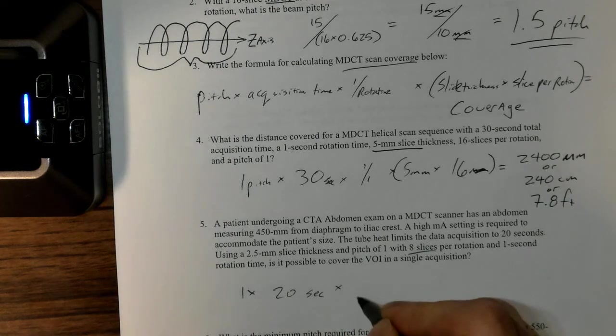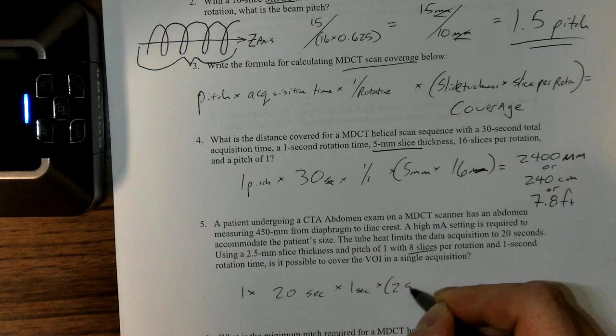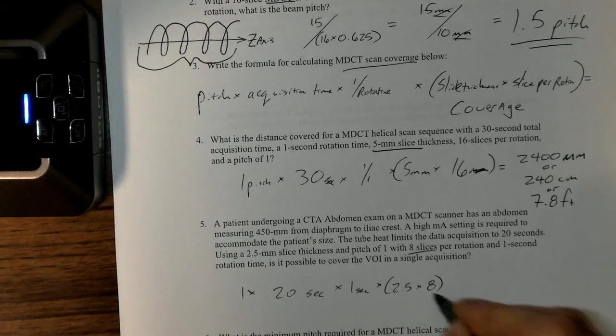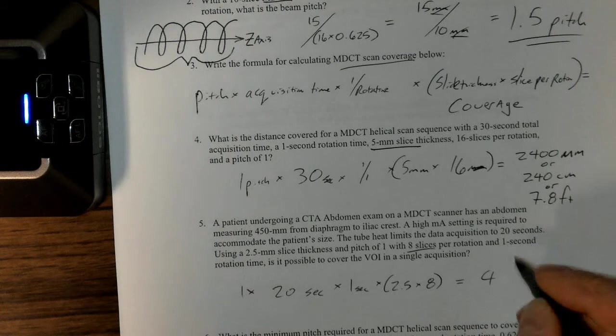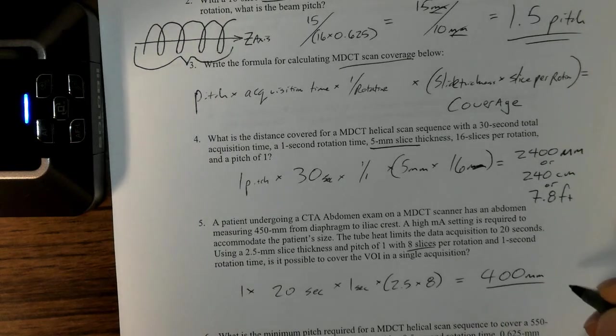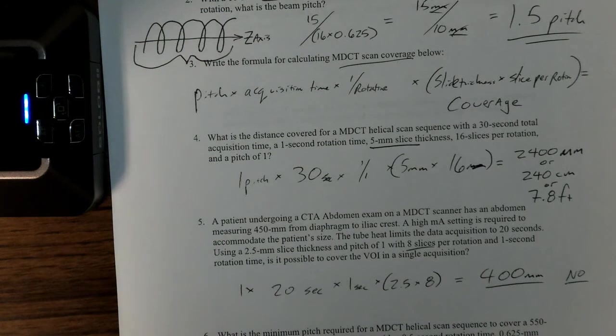We've got 20 seconds of time, one second per rotation, times 2.5—so we're trying to get that smaller slice thickness for better resolution—on an eight-slice CT scanner. That's going to give me 400 millimeters.